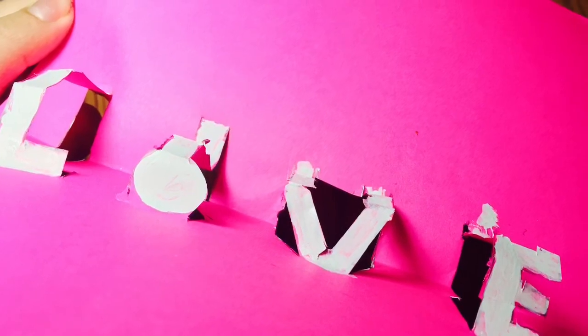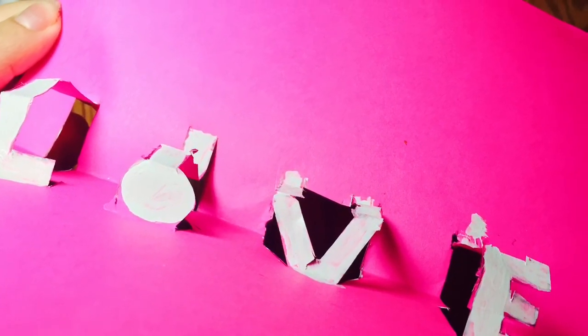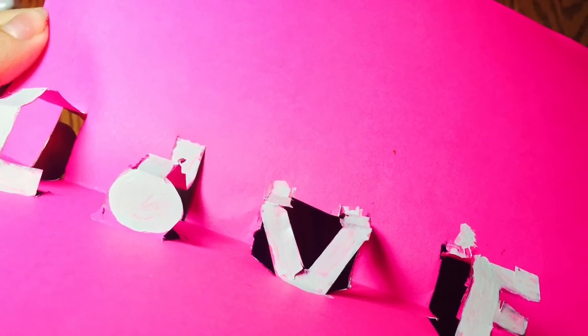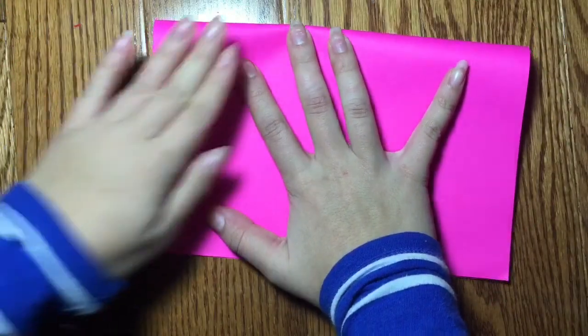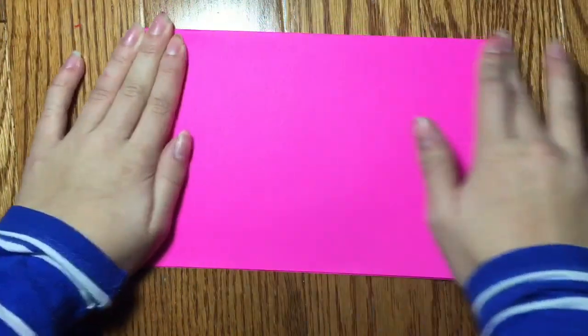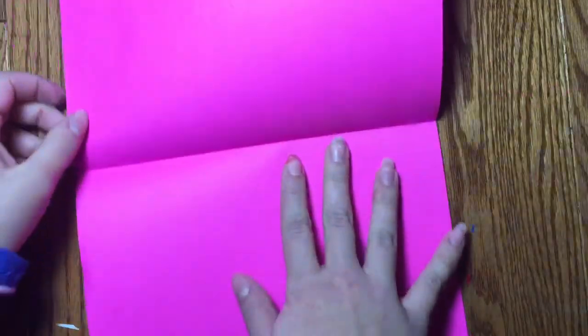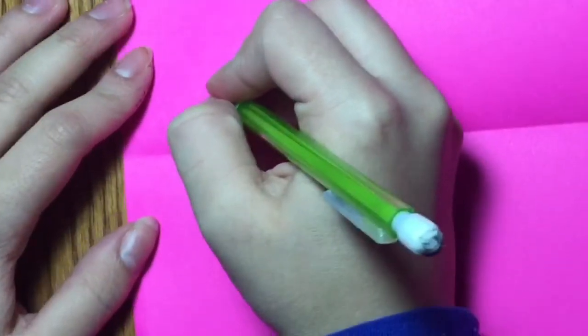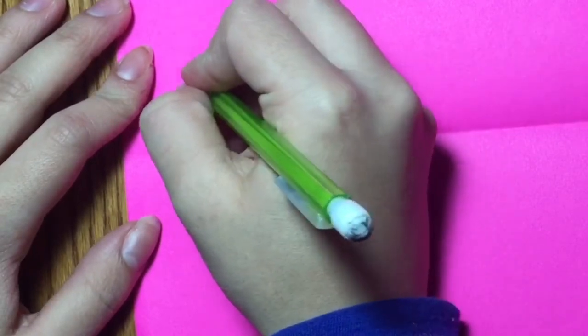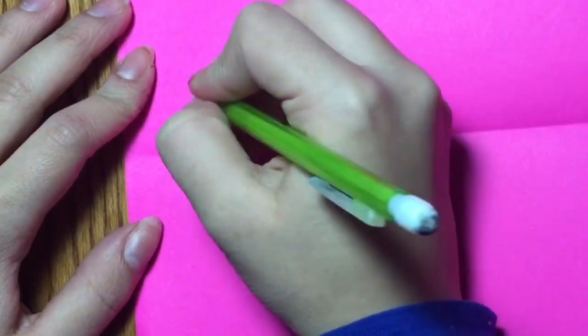The previous pop-up I showed you was vertical, so I'm going to show you just another pop-up that you could do if you wanted to make a horizontal card. So first, you want to trace a rectangle-like shape through the crevice of the card.